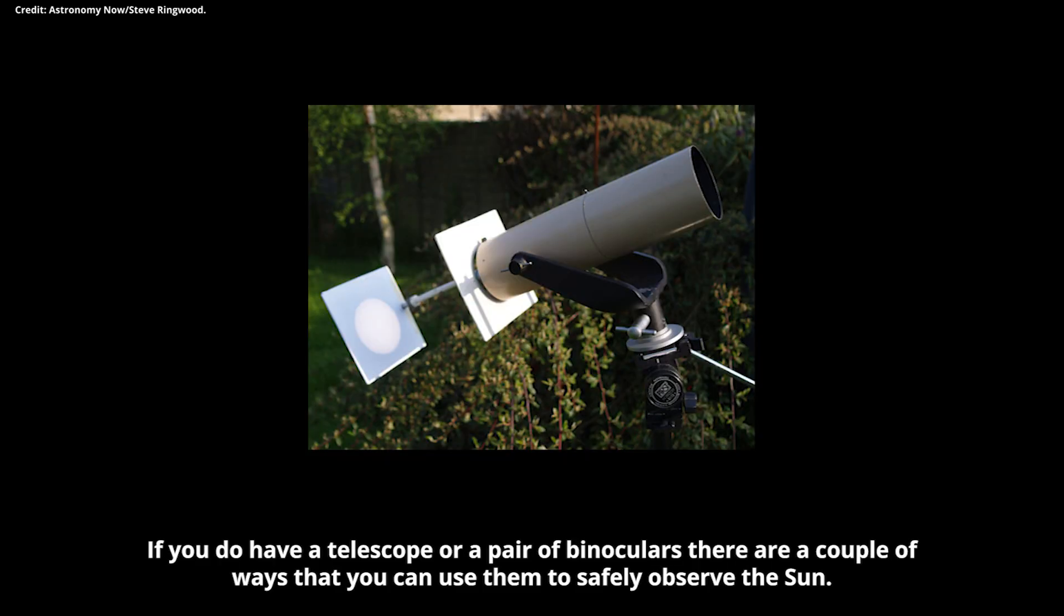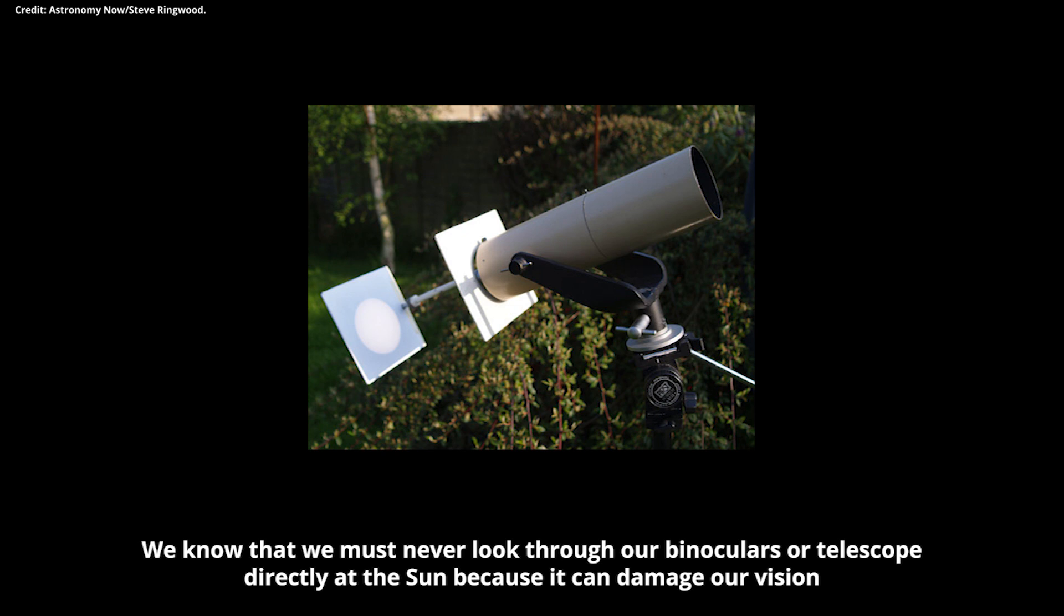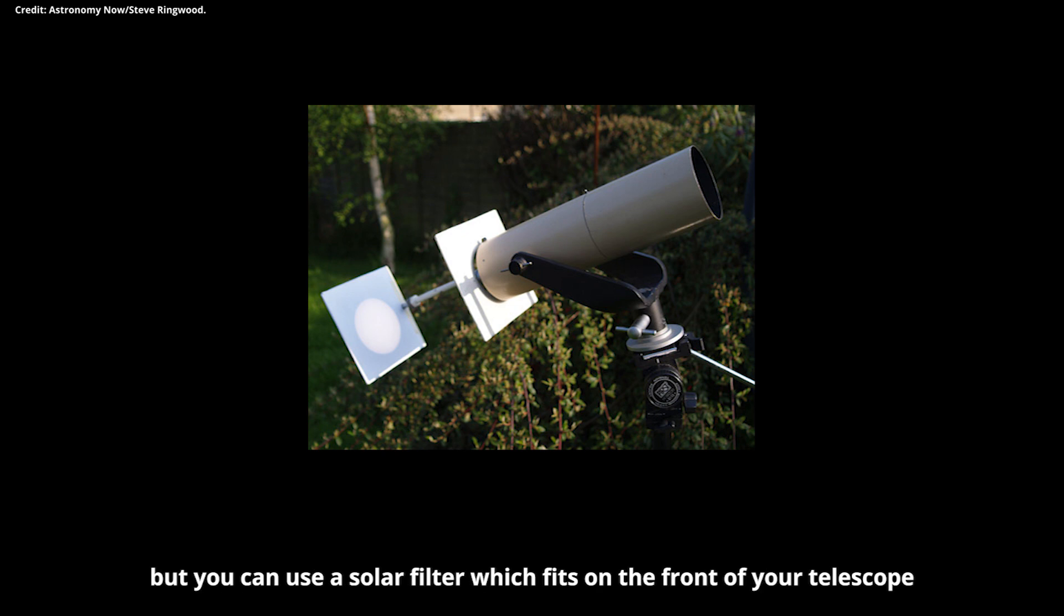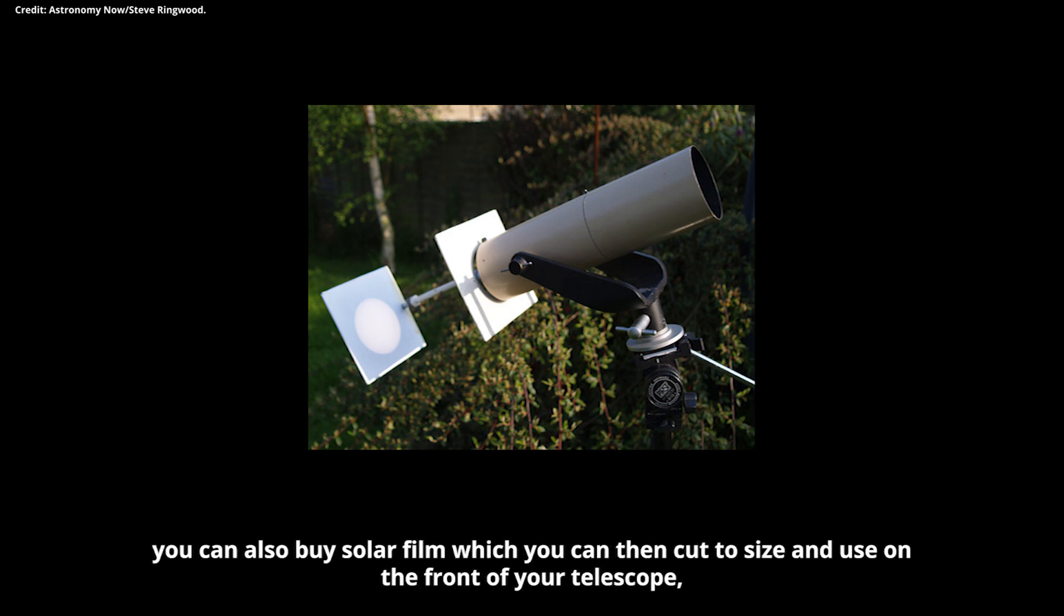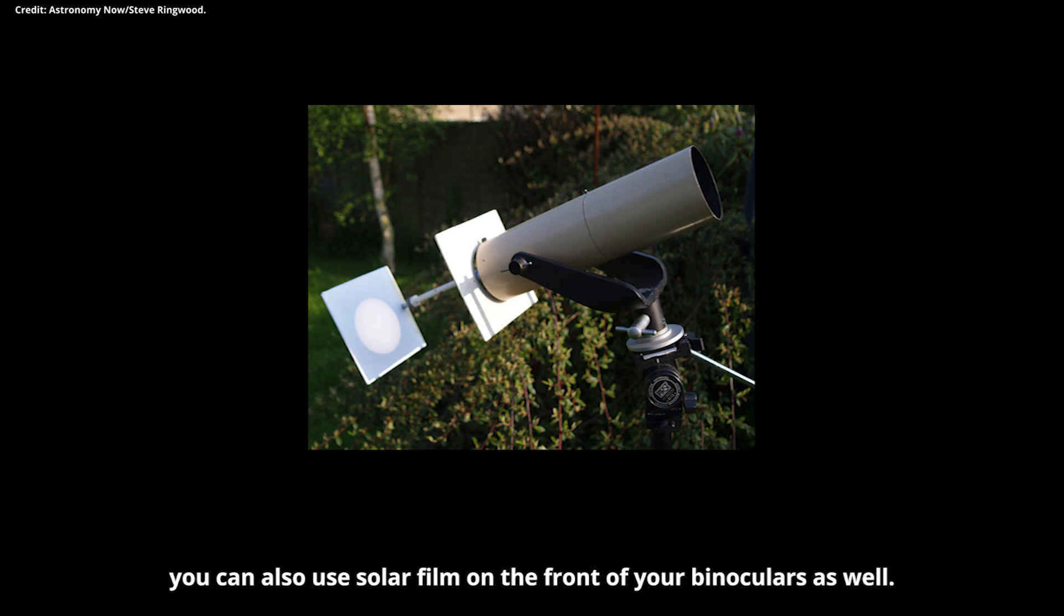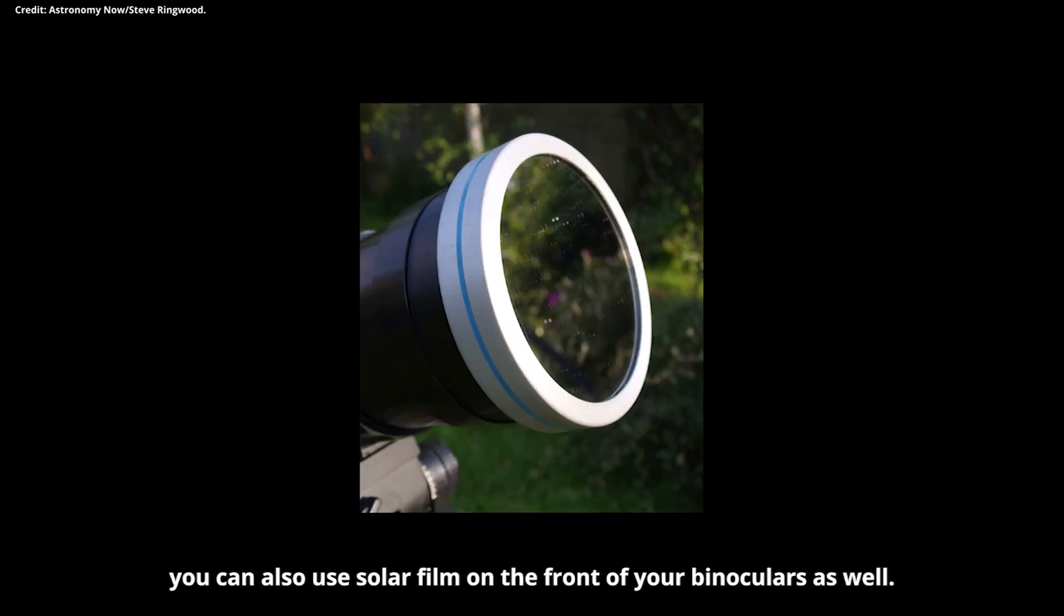If you do have a telescope or a pair of binoculars, there are a couple of ways that you can use them to safely observe the sun. We know that we must never look through our binoculars or telescope directly at the sun because it can damage our vision. But you can use a solar filter which fits on the front of your telescope. You can buy those from any reputable telescope supplier. You can get glass ones that screw on the front of your telescope. You can also buy solar film which you can then cut to size and use on the front of your telescope. You can also use solar film on the front of your binoculars as well.